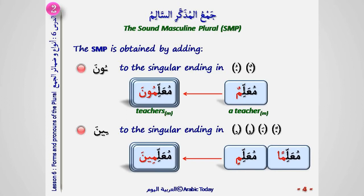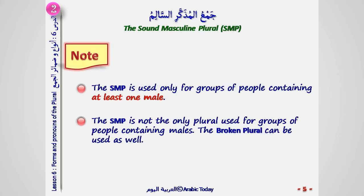As the suffixes are case endings, the difference between معلمون and معلمين is syntactic, not semantic. The sound masculine plural is used only for groups of people containing at least one male. It is not the only plural used for such groups — the broken plural can be used as well.